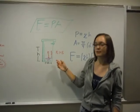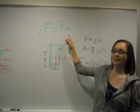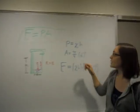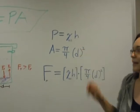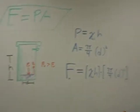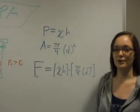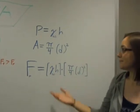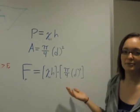The force of pressure is equal to pressure times area, where pressure is equal to the gamma of water times the height of water in the tank, and area is equal to π/4 times D squared, giving us our final force of pressure equation.